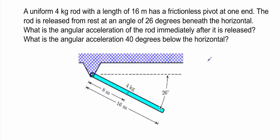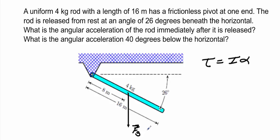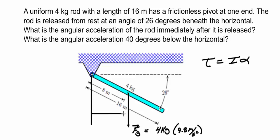When you have a problem like this, you're going to use the equation that torque is equal to the moment of inertia times the angular acceleration. To find the torque, I will draw an arrow at the center of mass of the rod coming straight down — this will be the force of gravity. The force of gravity is just going to be the 4 kilograms times 9.8 meters per second squared. Note that when calculating the moment arm, it's going to be the perpendicular distance from the force. So we're looking for this distance here, which is going to be 8 meters times the cosine of 26 degrees.